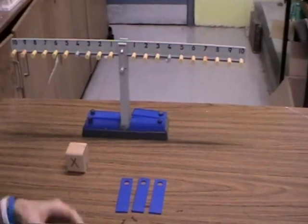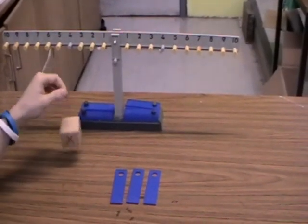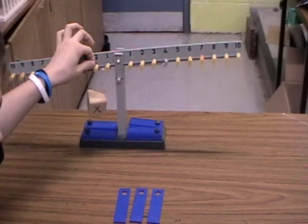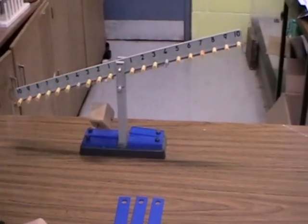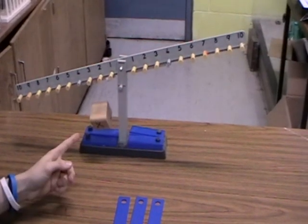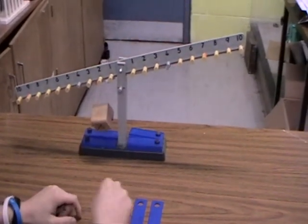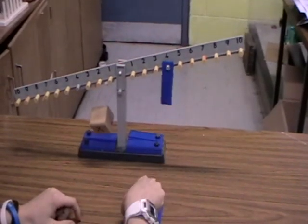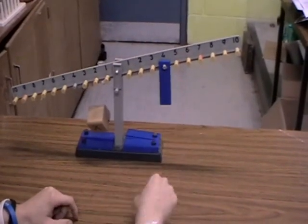Suppose I want to find the weight of this wooden block. I place it at the 2 mark. The moment on the left is 2 times x, which is 2x. I place two weights at the 4 mark on the right, and one weight at the 5 mark.